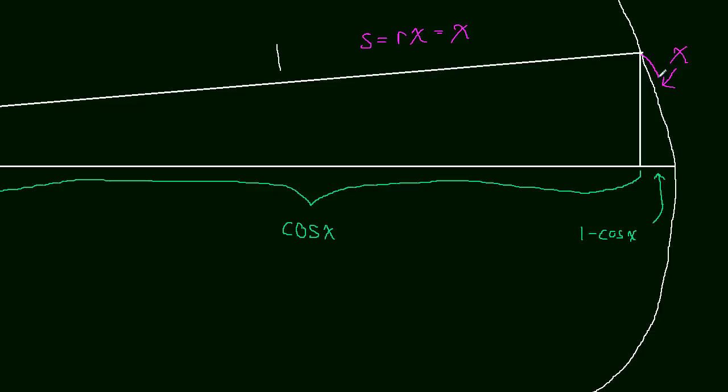So this arc that we've intercepted is equal to x. Well, I shouldn't have redrawn it. You can see the arc. So now when we look at what happens, the limit as x approaches zero, of one minus cos x over x. Well, let me color code that. Maybe it'll be easier to see. So one minus cos x divided by x.